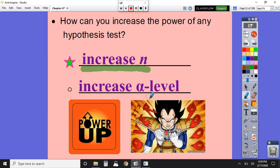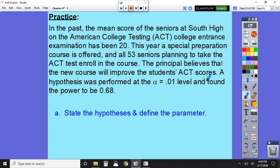So again, if you're ever asked, ways to increase the probability of power, you want to tell me increase the sample size. The other way that you could do it is also to increase your alpha level. All right, so let's take a look at an example here.